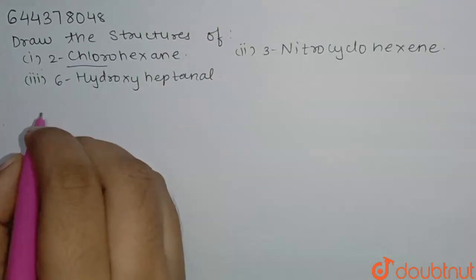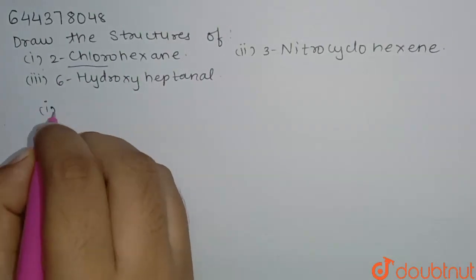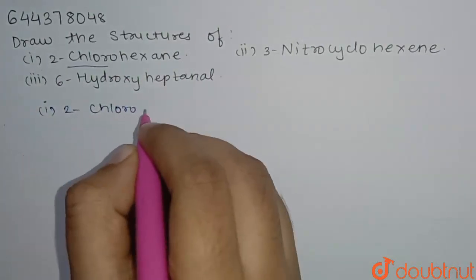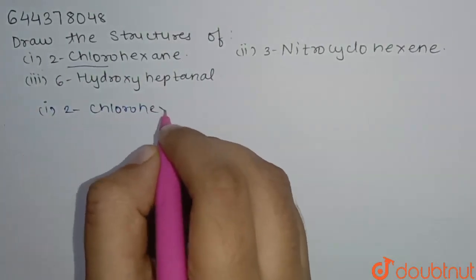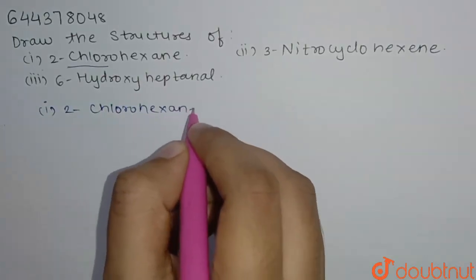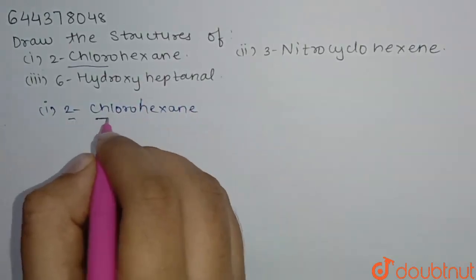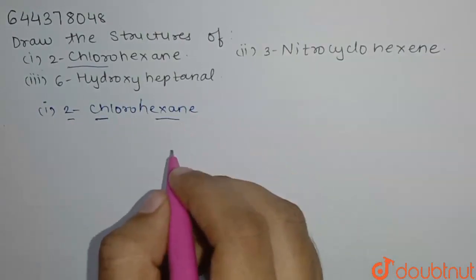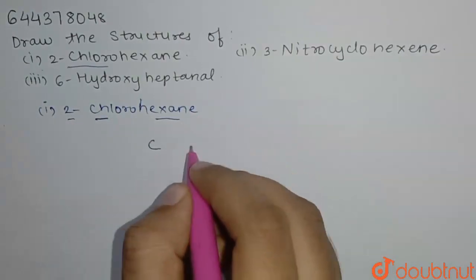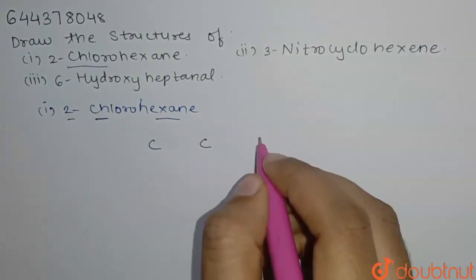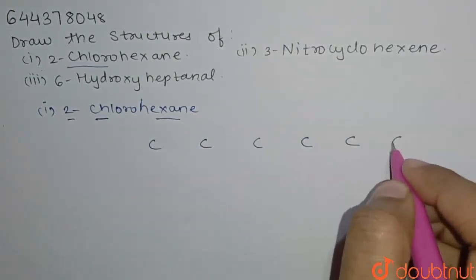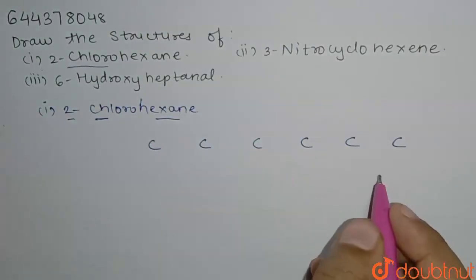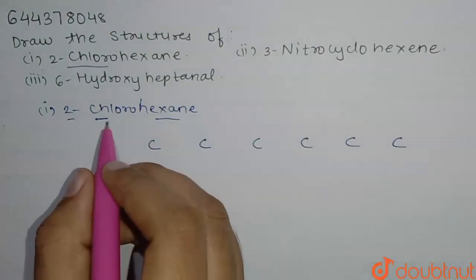So here we have the first molecule, 2-chlorohexane. At second position there will be our chlorine group. For hexane we have 6 carbons, so we will number them 1, 2, 3, 4, 5, 6. At second position we have chlorine — we will take this as the second position.